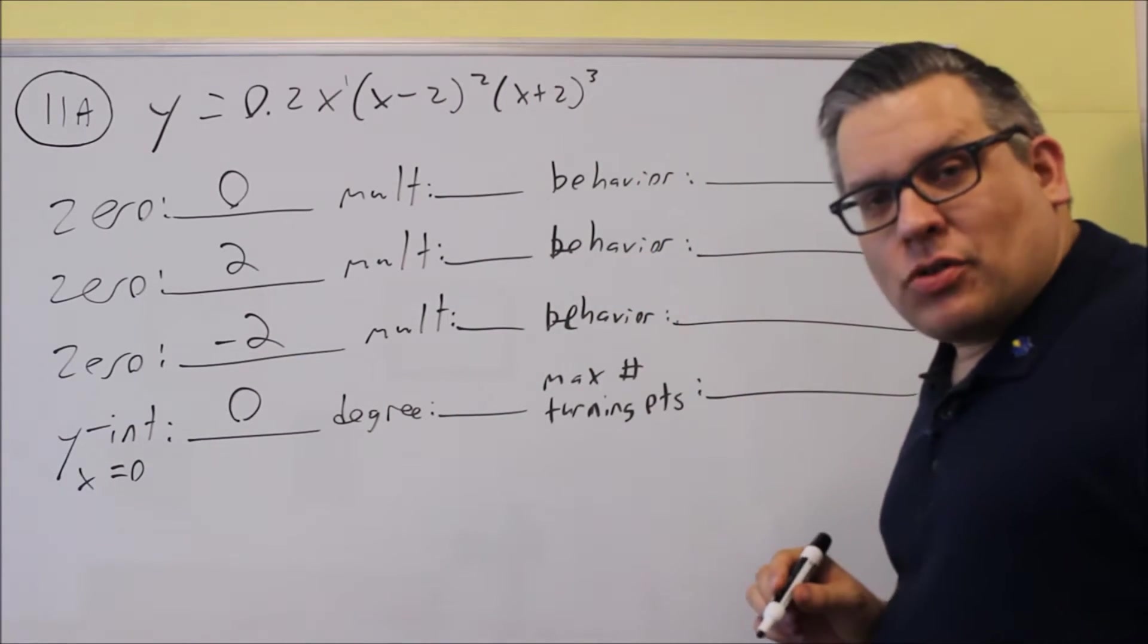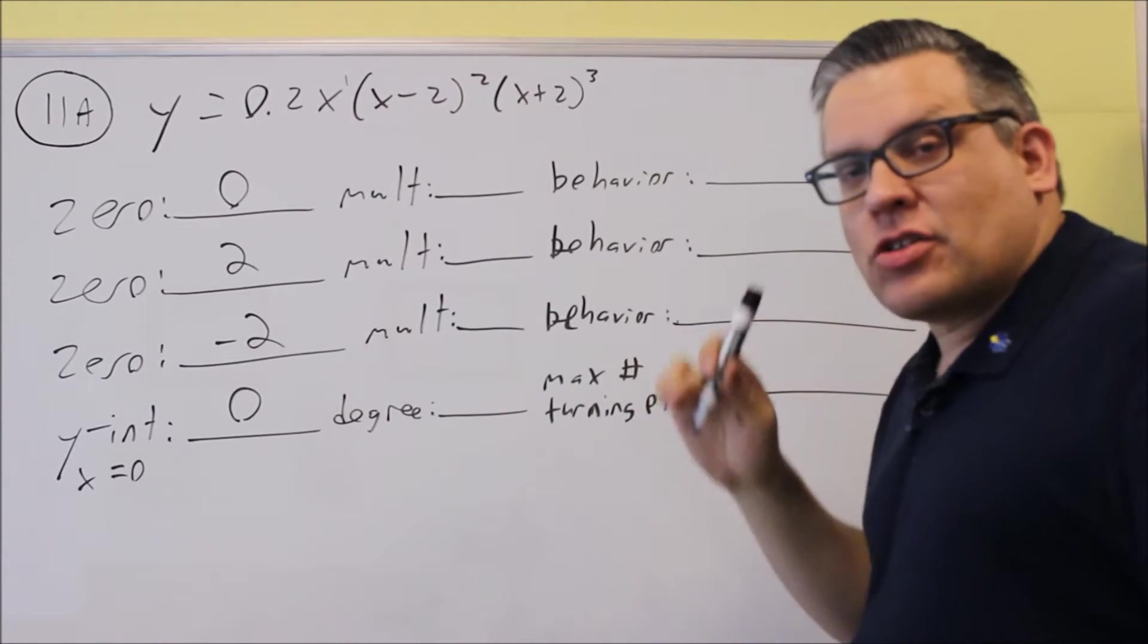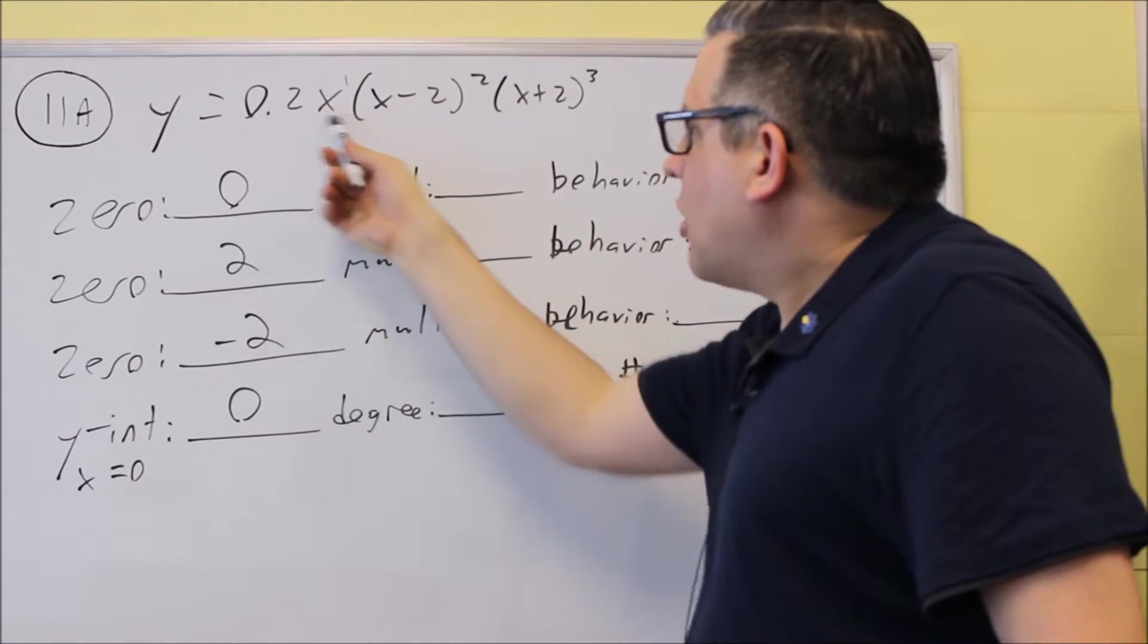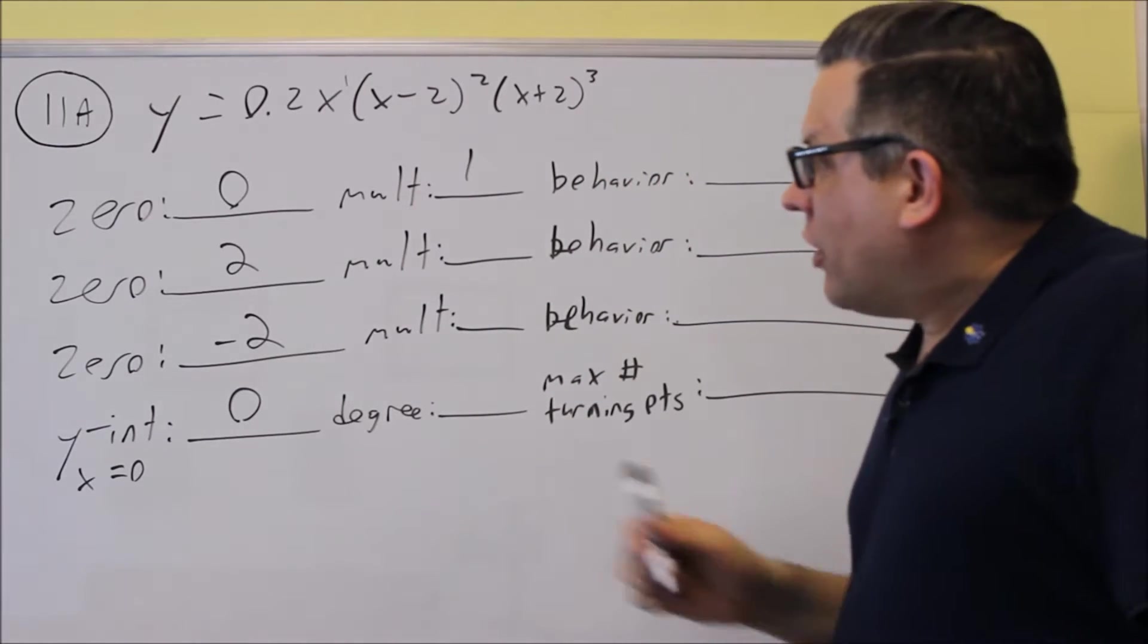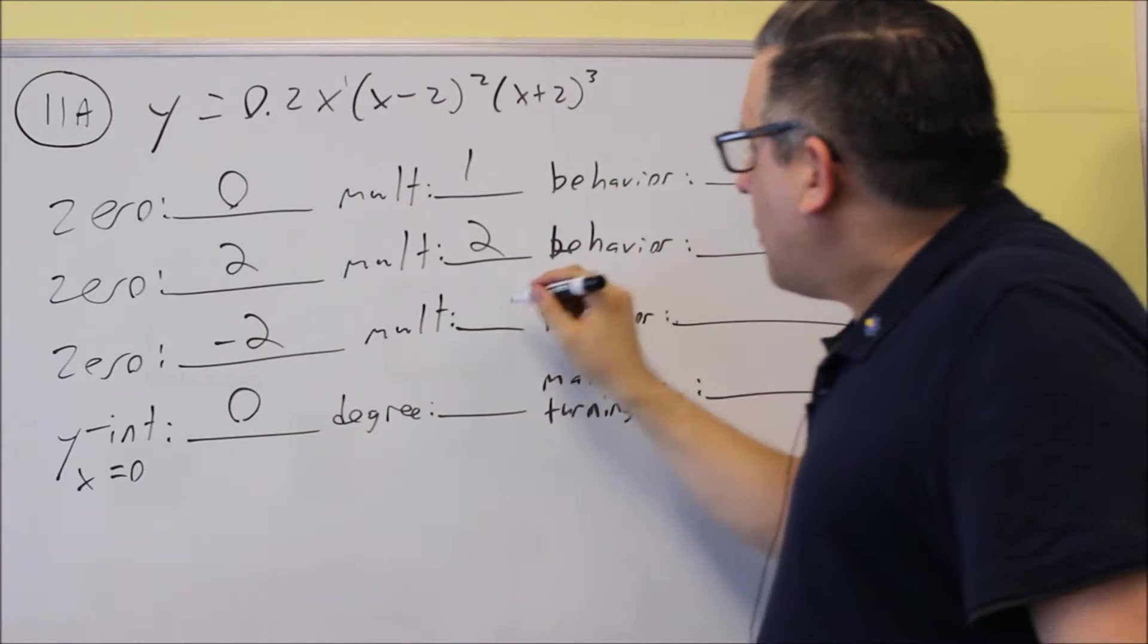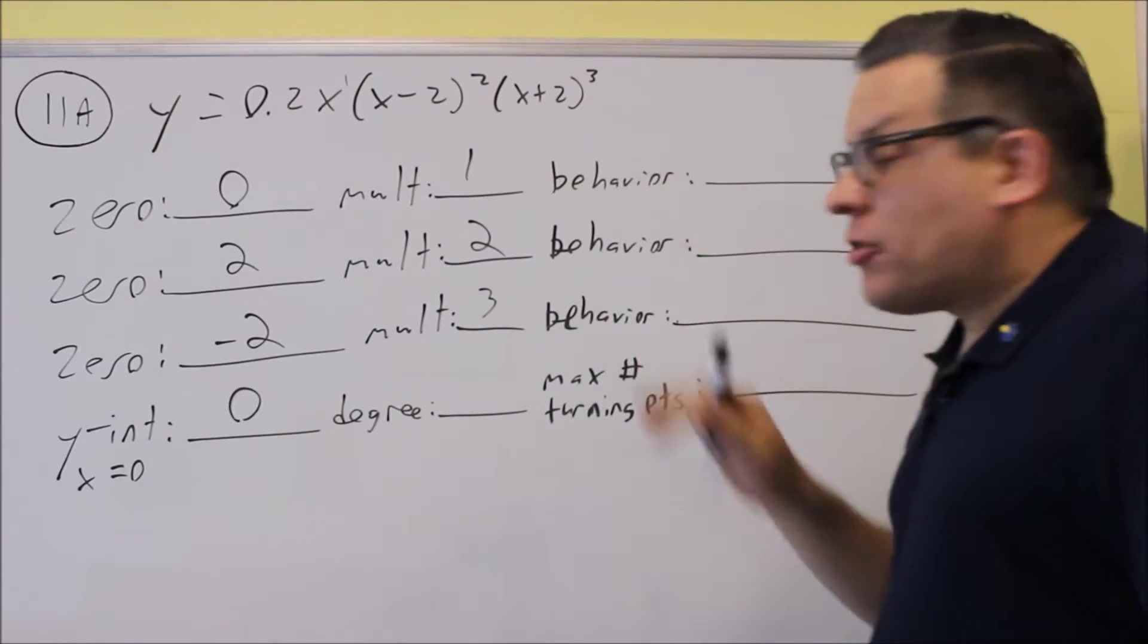Next we want to do the multiplicities. Multiplicities would be the factors, the powers that are on each of the factored pieces. The first one, I can consider this all one term here, 0.2x. The power on that is one, so multiplicity is one. The next one, multiplicity would be two. And then here, the multiplicity would be three, so I just get the powers off of the factored pieces.